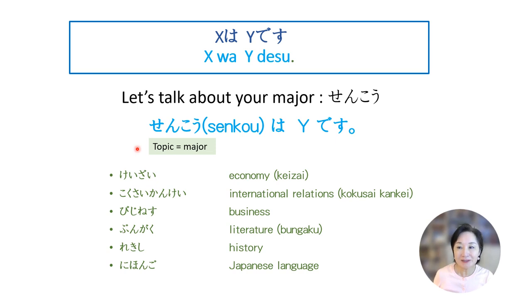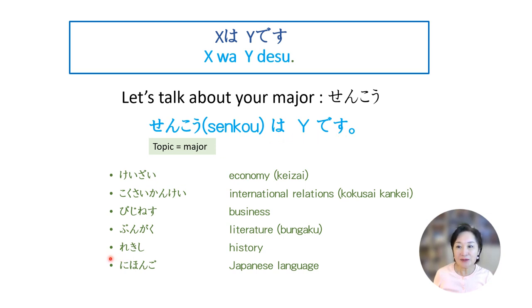それでは、トピックを変えましょう。 Let's change the topic to your major. How do you say 'My major is business'? Sen-kou wa business desu. Then how do you say 'Your major is history'? Sen-kou wa rekishi desu.